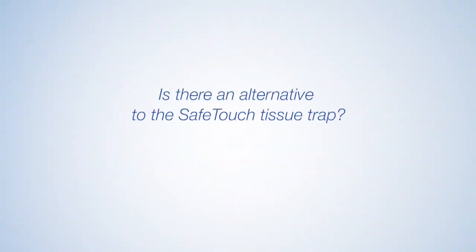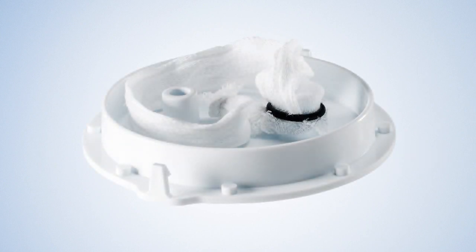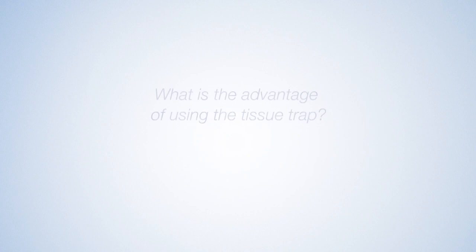Is there an alternative to the SafeTouch tissue trap? A permeable gauze sack with O-ring can be attached to the underside of the patient port on the primary collection canister. If a gauze sack is used, the tubing is directly attached to the patient port of the primary collection canister lid.